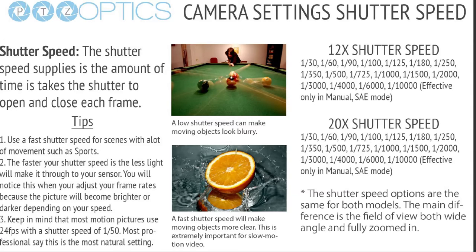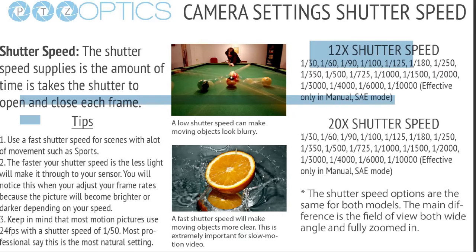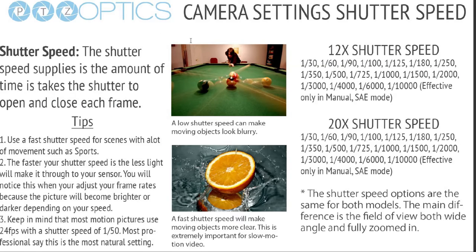The standard is 24 frames a second at 1/50th of a second shutter speed, and most professionals say this is the most natural setting. A useful tip: double your chosen frame rate and use that as your shutter speed — 24 fps doubled is 48, so the next closest is 1/50th; if you're using 60 fps, do 1/120th. A low shutter speed can make objects look blurry, while a fast shutter speed stops moving objects and is great for sports. We offer shutter speeds from 1/30th all the way up to 1/10,000th of a second, though the fastest speeds are only effective in manual mode.